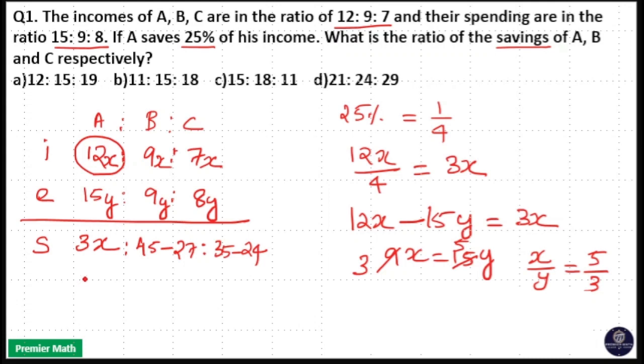So 3 into x is equal to 15. 3 into 5 is equal to 15, x is equal to 5. 45 minus 27 is equal to 18, and 35 minus 24 is equal to 11. So 15 is to 18 is to 11 is your answer. So option C is your answer.